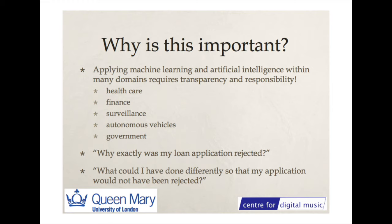For instance, why exactly was my loan application rejected — something that happened to me recently? And what could I have done differently such that my loan application would not have been rejected? It apparently changed my nationality — technology was one of the reasons — because I've only been established in the UK for a couple of years.